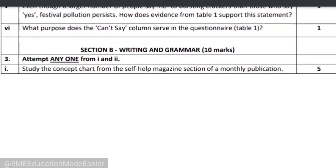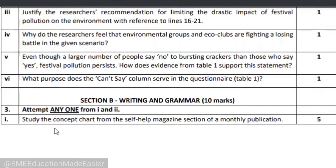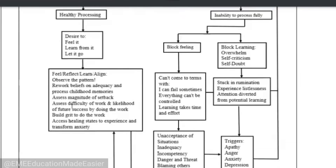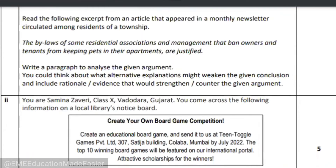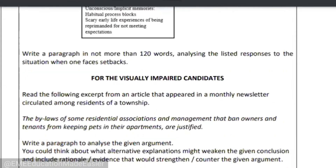Moving on to the writing and grammar portion. Again, you have two sections — one and two — and you have to do any one. For example, the first one is: study the concept chart from the self-help magazine section of a monthly publication. This is the chart given — a self-help chart — and then you have to write a paragraph in not more than 120 words analyzing the listed responses to the situation when one faces a setback. The other option is for the visually impaired, since they cannot see the table.